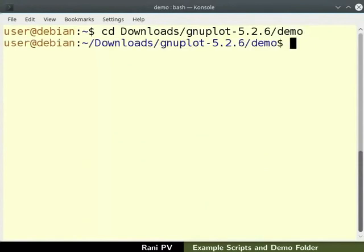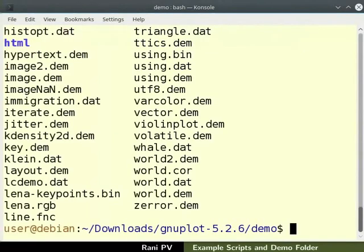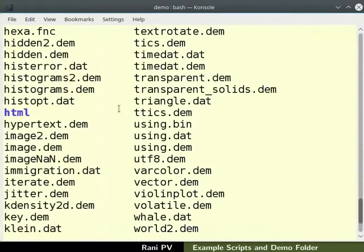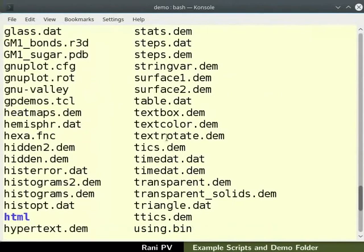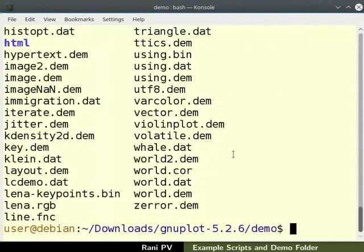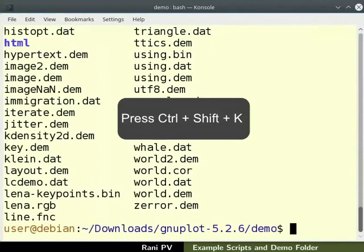We are in the demo directory which contains the example files. Type ls to list the files in the demo directory. Notice there are several files with .dem extension. They are simple text scripts which are used to generate the plots.